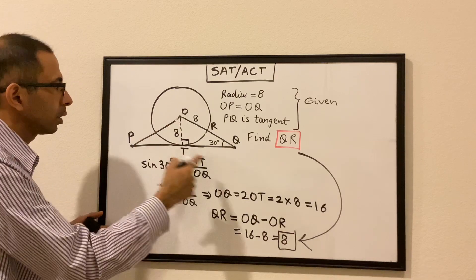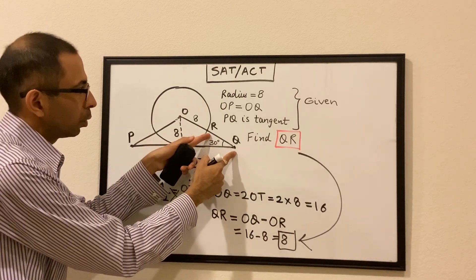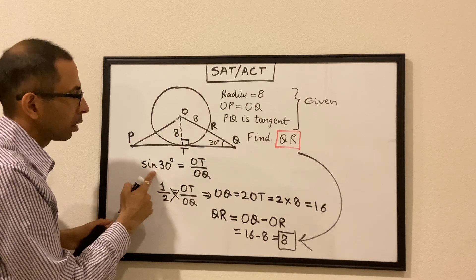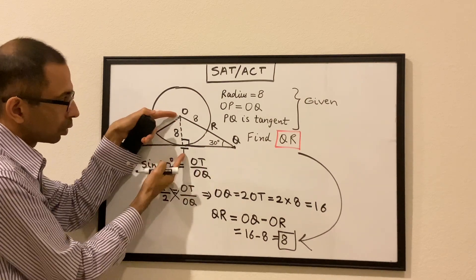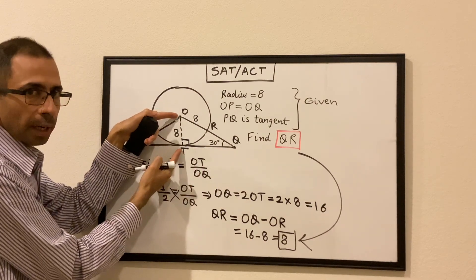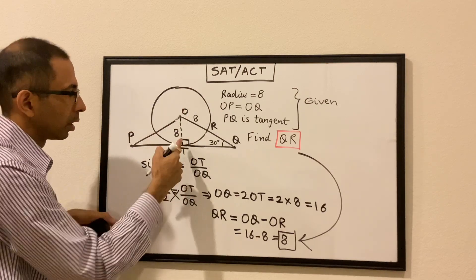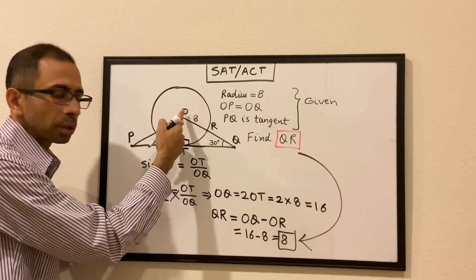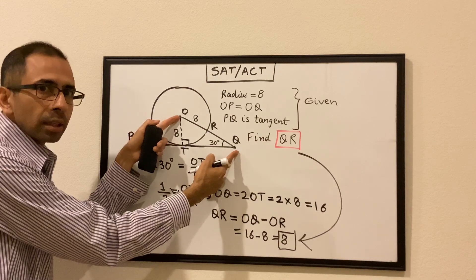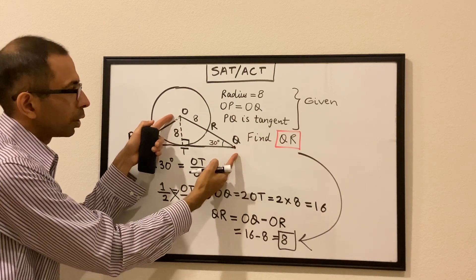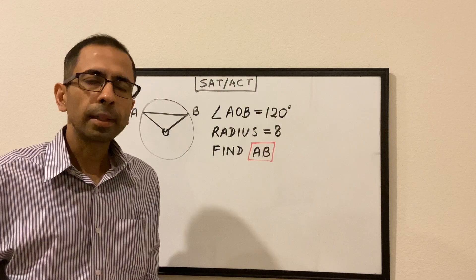To quickly reiterate: we needed to find the length of RQ. We used sine of 30 degrees to find OQ, knowing the opposite side is the radius, and the angle is 90 degrees because PQ is a tangent. Once we found OQ, and since OR was already given, we could find QR.